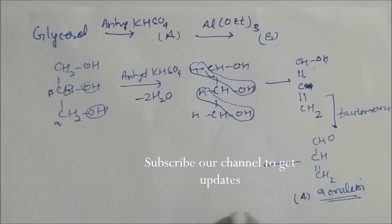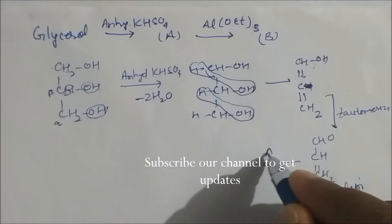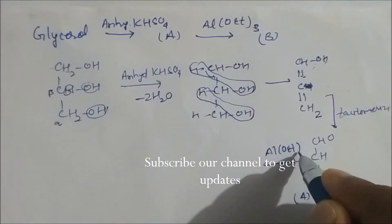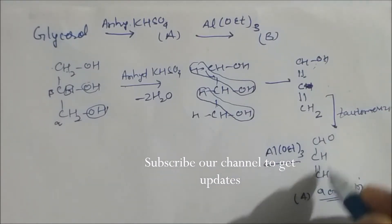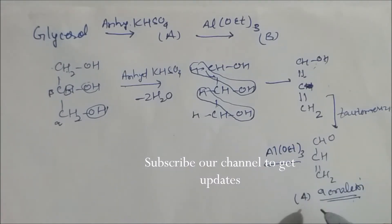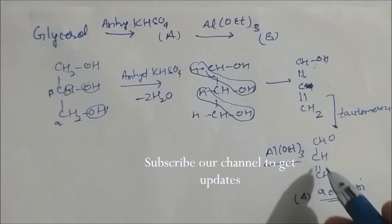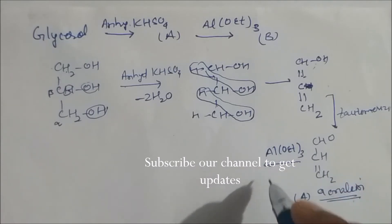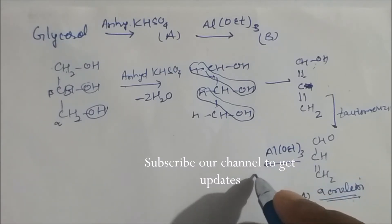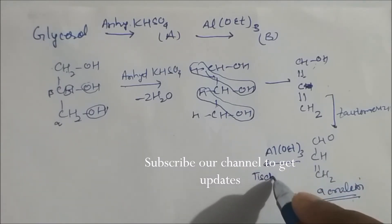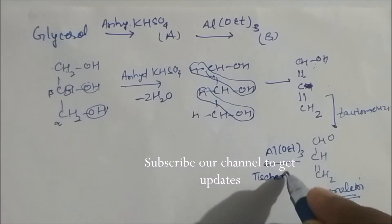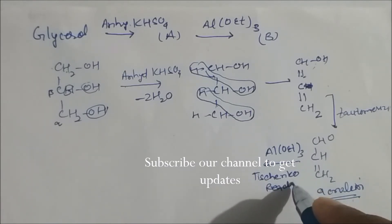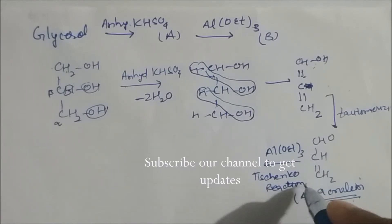Product A is acrolein. Now acrolein reacts with ammonium ethoxide — Al(OEt)₃. Since acrolein is an aldehyde compound, any aldehyde in presence of ammonium ethoxide undergoes the Tischenko reaction. This is the name reaction, and it gives an ester product.